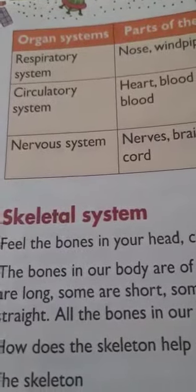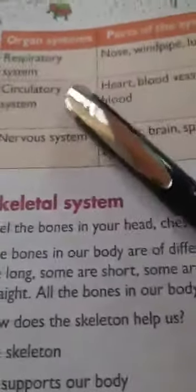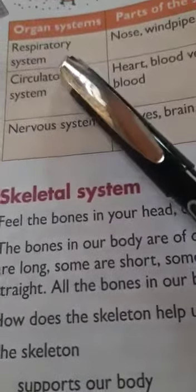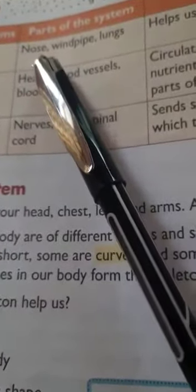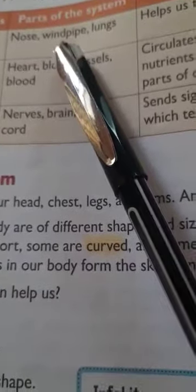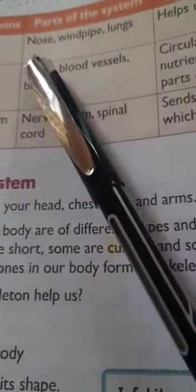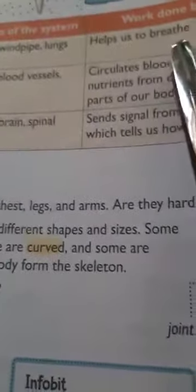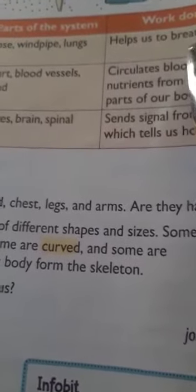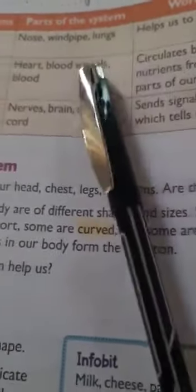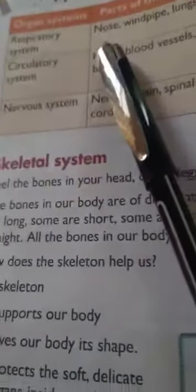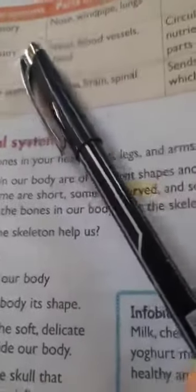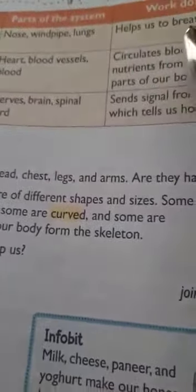Next is the respiratory system. The parts involved are nose, windpipe, and lungs. The respiratory system helps us to breathe. Living things need to breathe air, and the oxygen we breathe in is absorbed by our body through the nose, windpipe, and lungs.